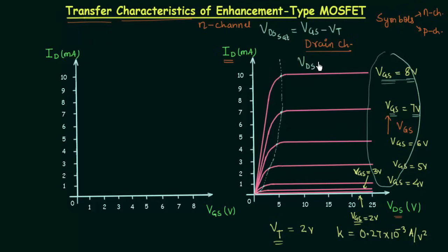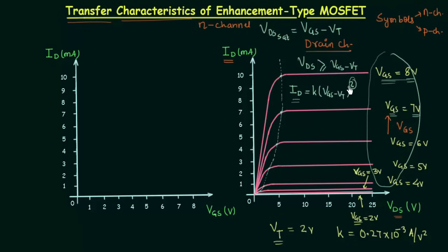The condition for saturation region is VDS must be greater than or equal to VGS minus VT. In the saturation region, the drain current ID equals K multiplied by (VGS minus VT) squared. This is an important equation. Because of the squared term, the transfer characteristic will not be linear. The transfer characteristic is the plot between output current ID and input voltage VGS for constant output voltage VDS.